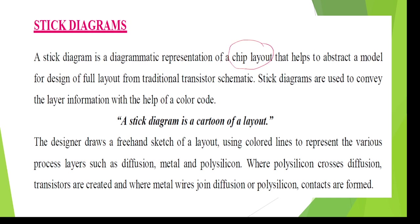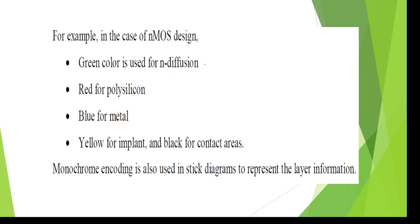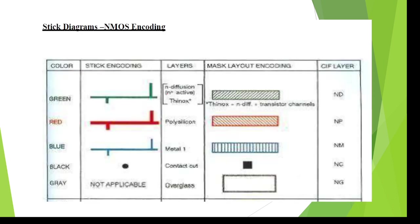To draw the layout diagrams, universally they follow some rules for color coding. Green color is used for N-diffusion, yellow color is used for P-diffusion, red for polysilicon. Polysilicon is generally used to design a gate terminal. Blue is for metal, black for contact cut, and yellow for implant — so yellow is used for both implant as well as P-diffusion.